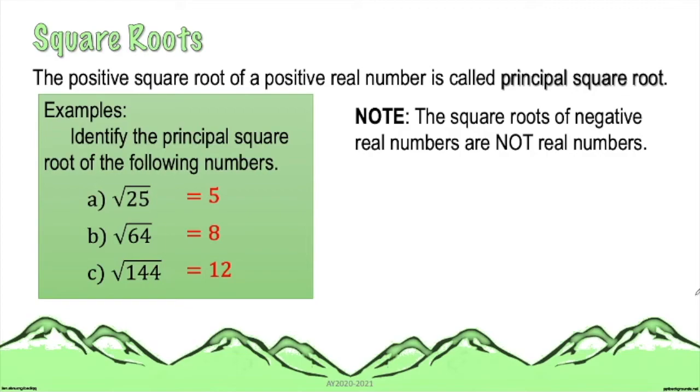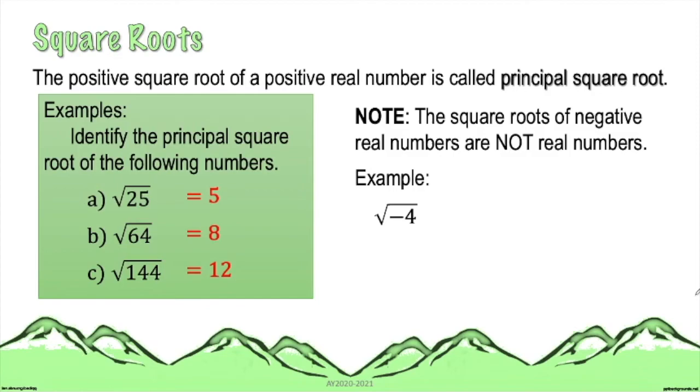Please take note that the square roots of negative real numbers are not real numbers. For example, if we have square root of negative 4, the radicand is a negative real number. The value of this would give you an unreal number, which is an imaginary number, and that would be discussed in the next level of mathematics.